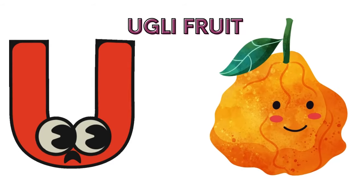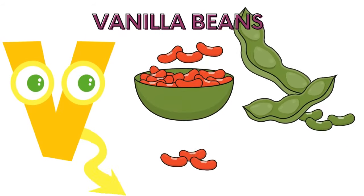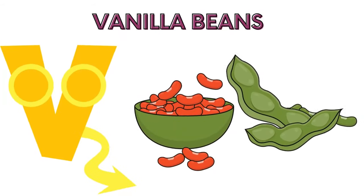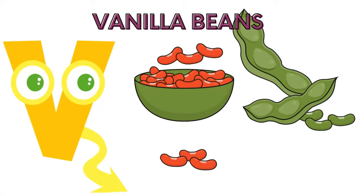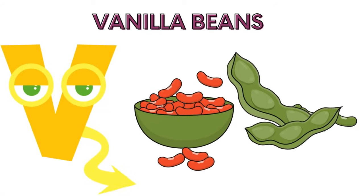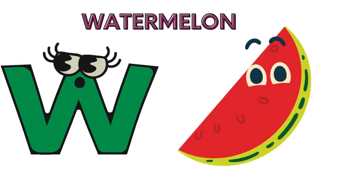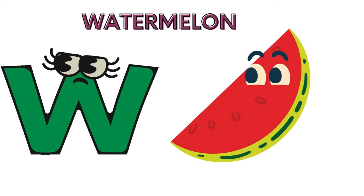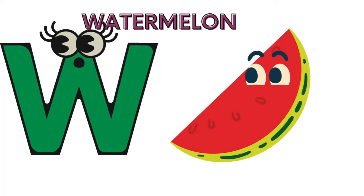U is for ugly fruit, U-U, ugly fruit. V is for vanilla beans, V-V, vanilla beans. W is for watermelon, W-W, watermelon.